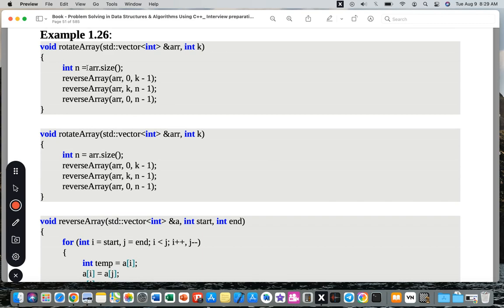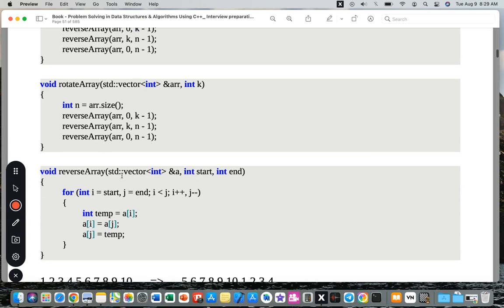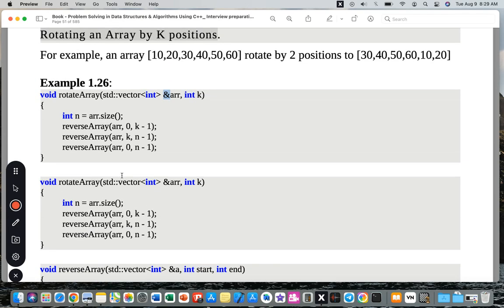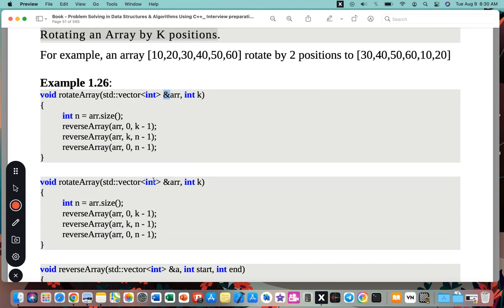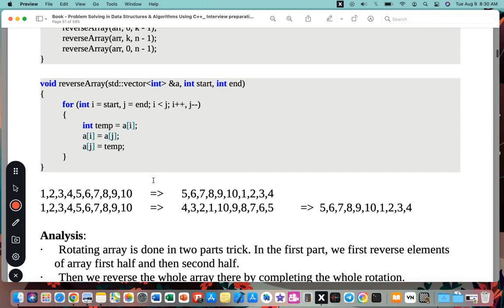So here's the rotate array function, passing the vector and k. We are always passing it as a reference. And here is a reverse array, also passing the array as a reference, with the starting point and ending point.